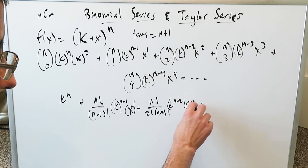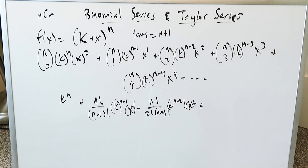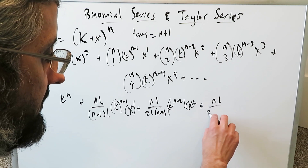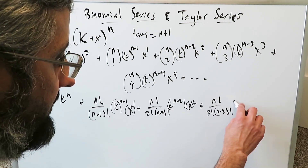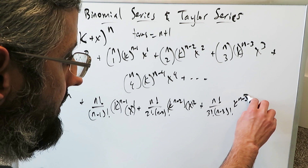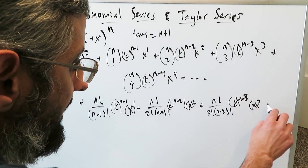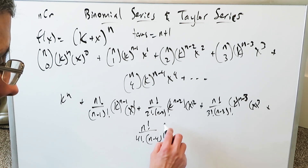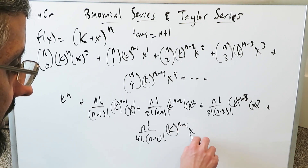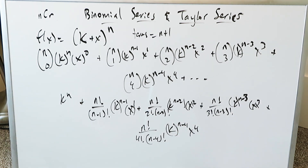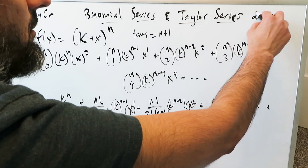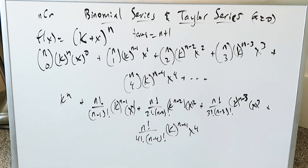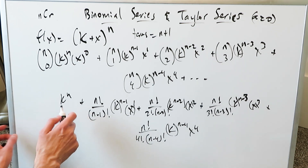You know how to do this binomial theorem. For the nC3 term, you'll have n factorial over 3! · (n−3)! with k^(n−3) · x^3. And for the nC4 term: n factorial over 4! · (n−4)! with k^(n−4) · x^4. I have to simplify all of this in order to compare it to the result from the Taylor series centered around a = 0, which is synonymous to the Maclaurin series.